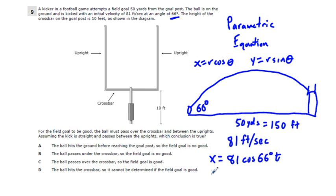Now y equals, there's a bit more complexity. You have the 81, but instead of the cosine 66 degrees, we have sine 66 degrees times T. And also, you have to take into account gravity, the effects of gravity, so that would be negative 16 T squared.